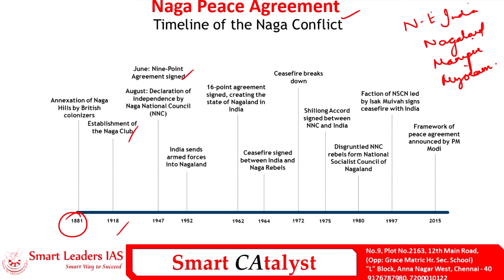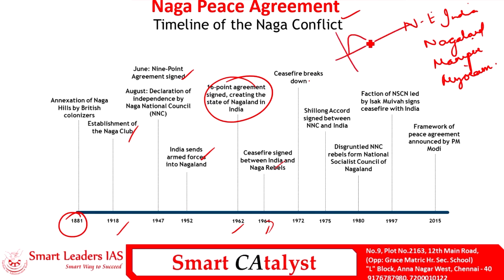In 1952, there was a skirmish between the central government and Naga groups, brought under control by armed forces. In 1962, a 16-point agreement was signed, which led to the creation of Nagaland state. A ceasefire was then signed between India and Naga rebels in 1964, but broke down in 1972. This follows a universal trend seen in rebel groups worldwide — they sign a ceasefire, negotiate concessions from the government, the rebellion breaks out again, and the cycle continues. In 1975, the Shillong Accord was signed between the Government of India and the Naga Nationalist Council.